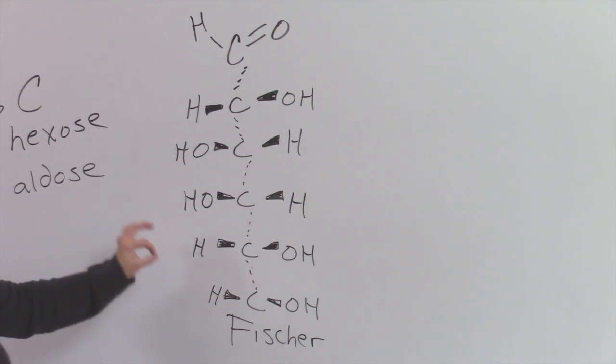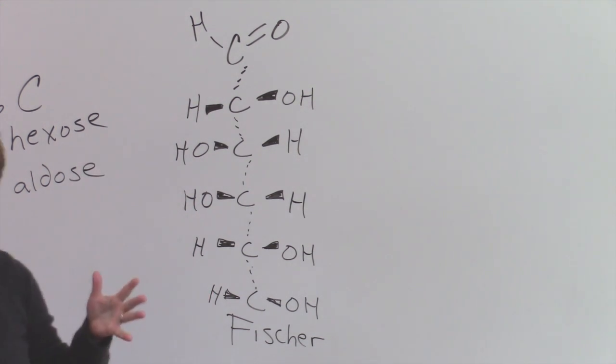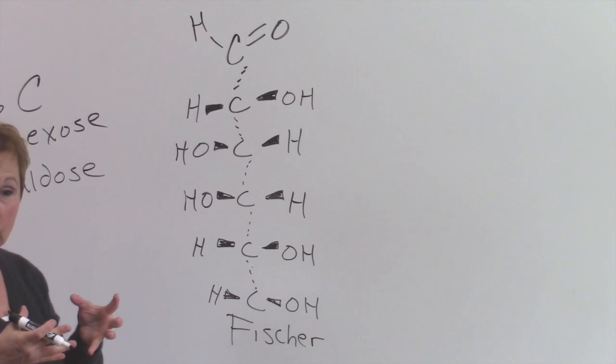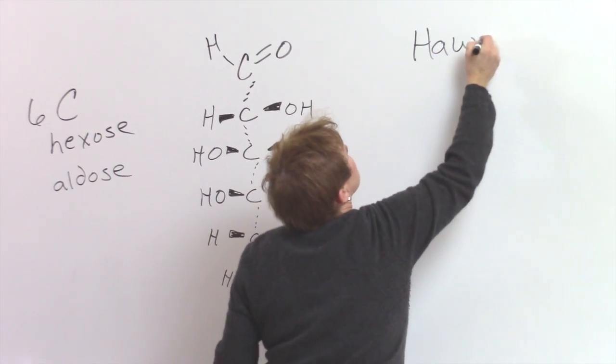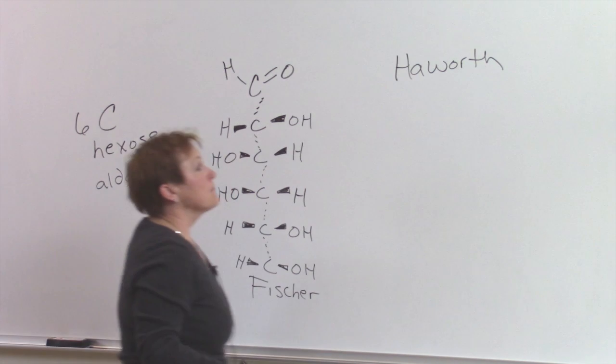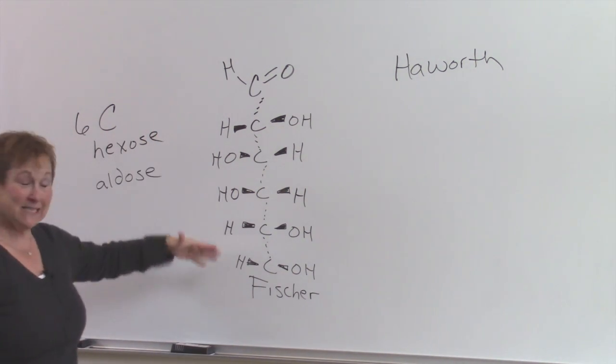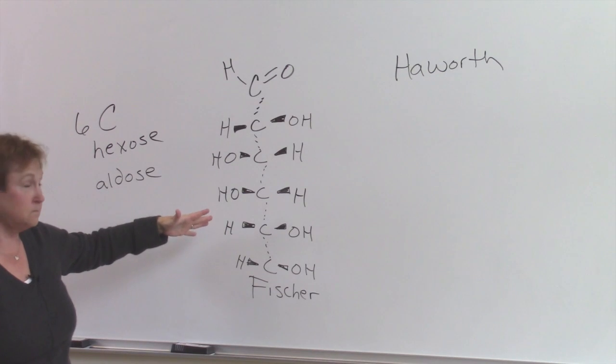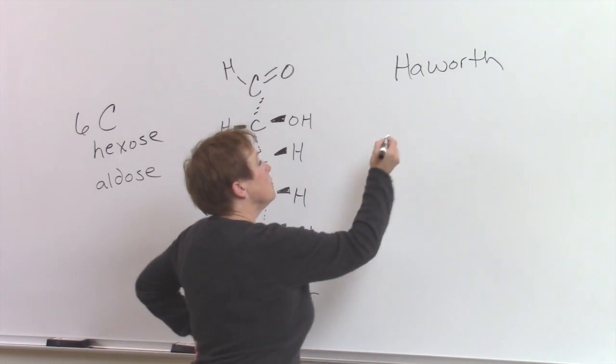Now like I said, in solution very small percentage of your carbohydrate is in this form. What is more stable is the cyclic form. The cyclic form is called a Haworth projection and we're going to focus today on making a Haworth projection from a six chain aldose sugar.